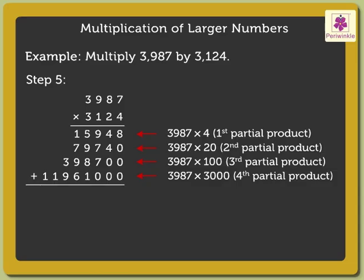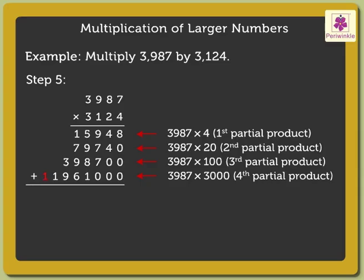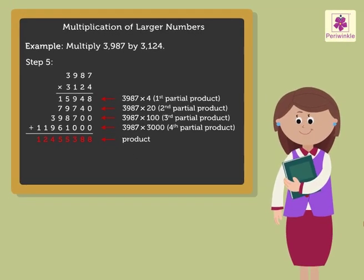Step 5: Now, add the 4 partial products obtained — that is 15,948 plus 79,740 plus 3,98,700 plus 1,19,61,000 — to get the answer, which is equal to 1,24,55,388. Wasn't it easy learning multiplication of larger numbers?